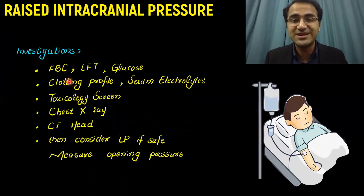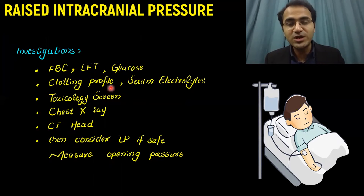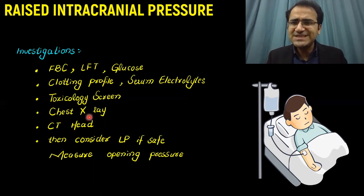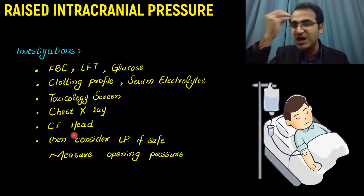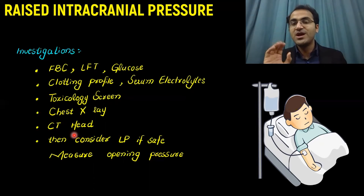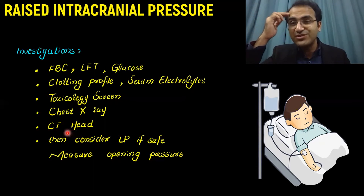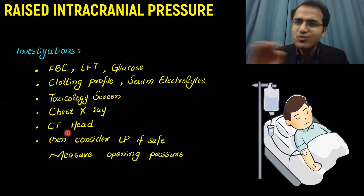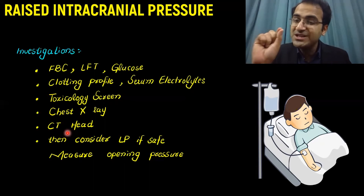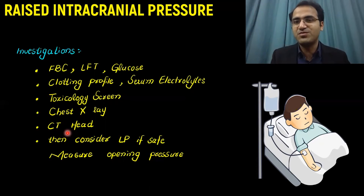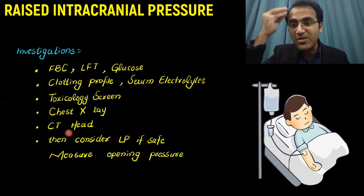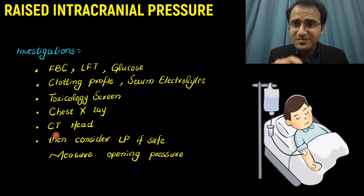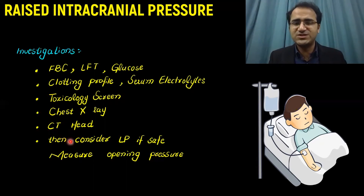Investigations needed in raised intracranial pressure include full blood count, LFTs, glucose, clotting profile, serum electrolytes, toxicology screen, chest X-ray, and CT of the head. After CT has ruled out a space-occupying lesion, you can proceed to lumbar puncture (LP). If you perform LP without CT and there is a tumor causing raised ICP, you risk causing brain herniation and death. Therefore, you must do a CT scan first to rule out a space-occupying lesion before performing LP.